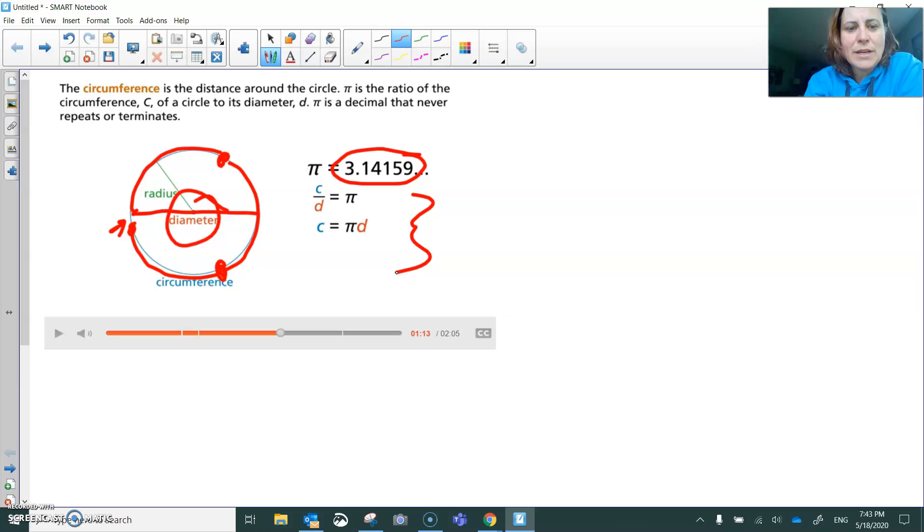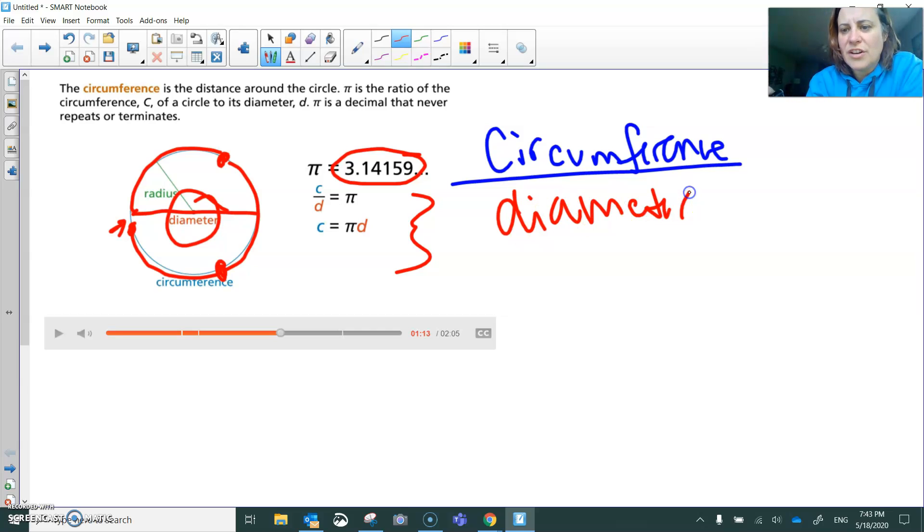In this part of the problem, they're basically saying if you take the circumference and divide it by the diameter, you're going to get about 3, a little more than 3, actually 3.14. Or another way to say it is 22 divided by 7.